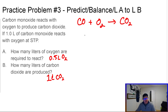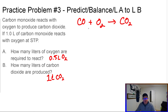Now we balance it. A little balancing magic: we put a 2 in front of CO, a 1 in front of O2, and a 2 in front of CO2. That gives us 2-1-2 — balanced.